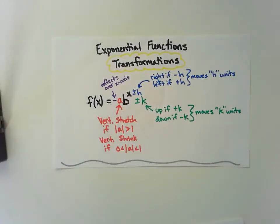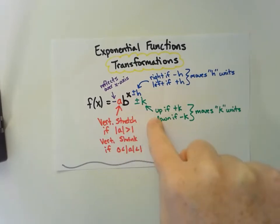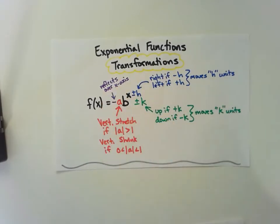In this video I want to talk briefly about exponential transformations. I wrote out my basic exponential form f(x) = b^x and then in each different color I put a different type of transformation that might occur.